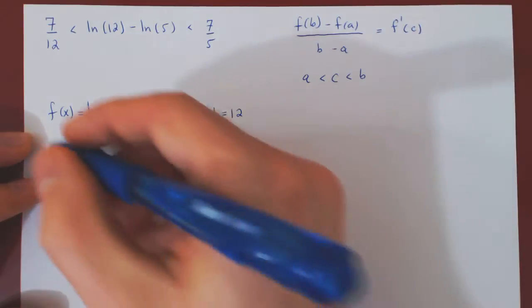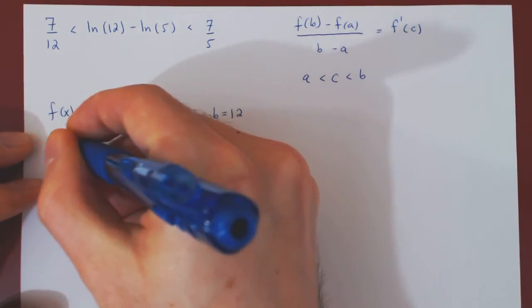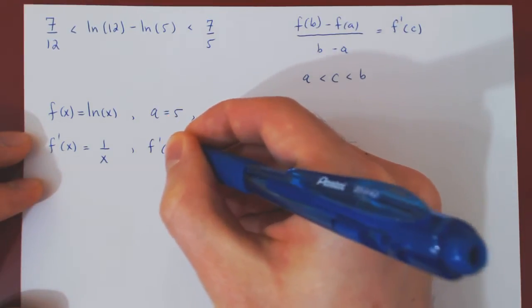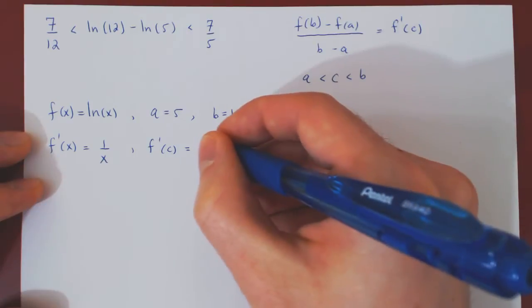Let's now apply the mean value theorem in this special case and see if we can obtain the desired conclusion. Well, we will need a derivative. The derivative of ln of x is, of course, 1 over x. And so the derivative of f at c, replacing x by c will be simply 1 over c.